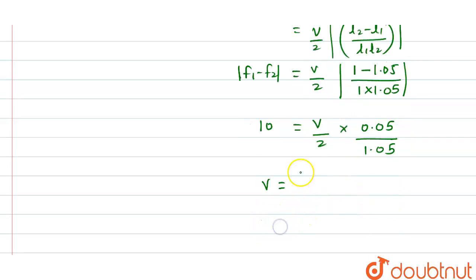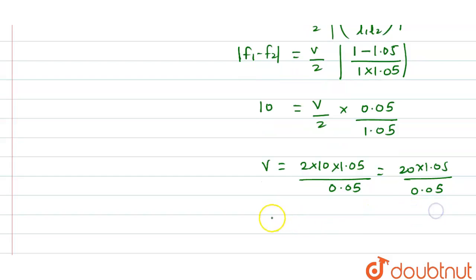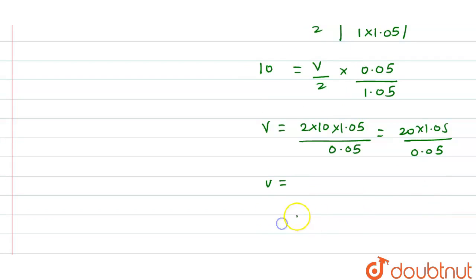V will be equal to 2 into 10 into 1.05 divided by 0.05. So it will be 20 into 1.05 divided by 0.05. We can write this as 20 into 105 divided by 5.